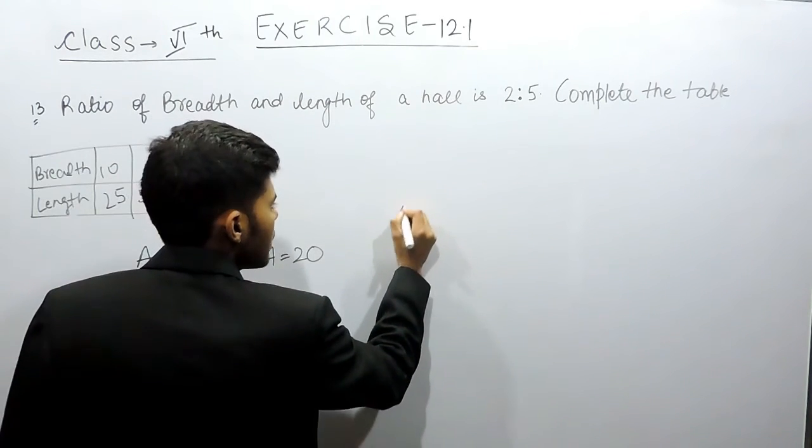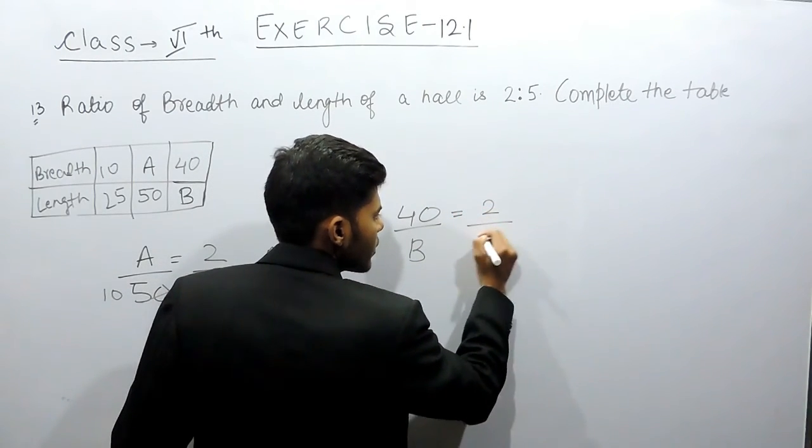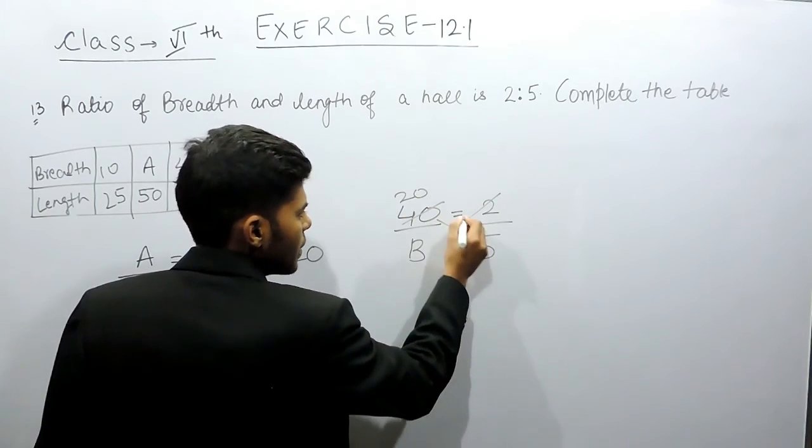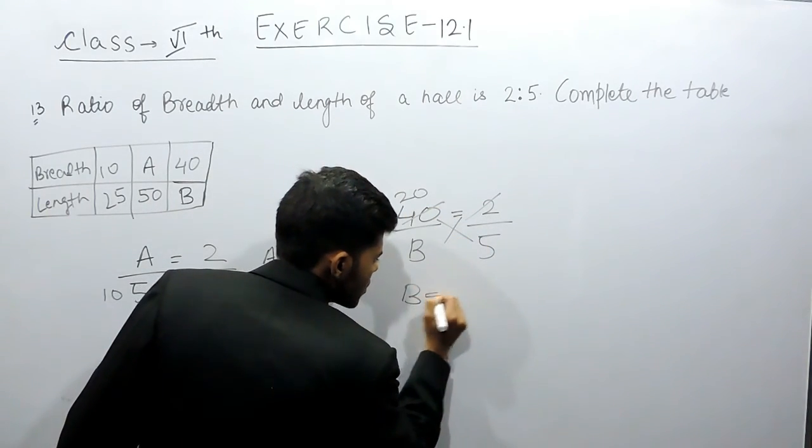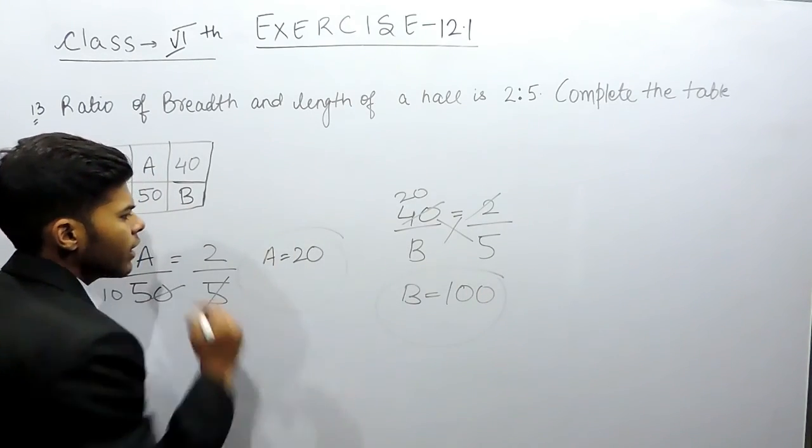Again, we'll do breadth by length. That will equal 2 by 5. Cross multiply, so B will equal 100. So this is the value of B, and this is the value of A.